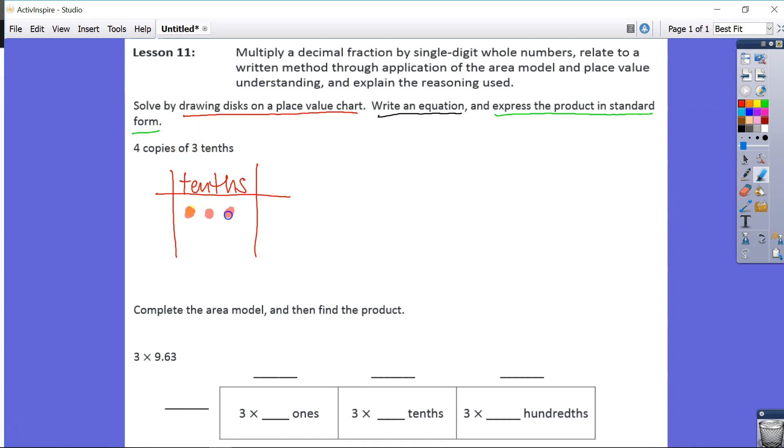One, two, three. That's one copy of three tenths. One, two, three. Two copies. One, two, three. That's three copies of three tenths. One, two, three. Four copies of three tenths.